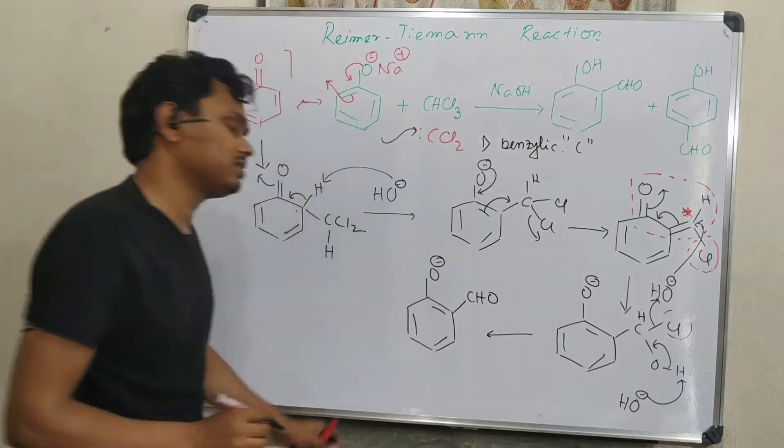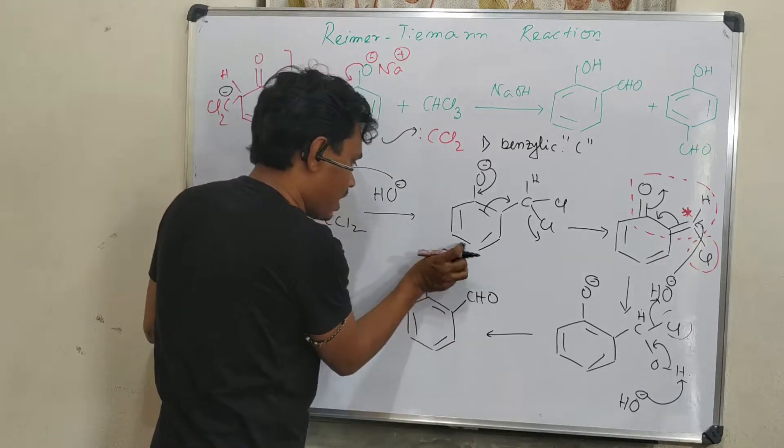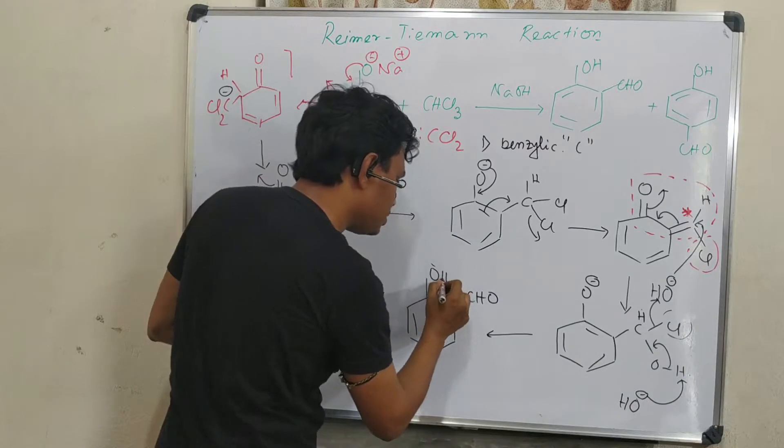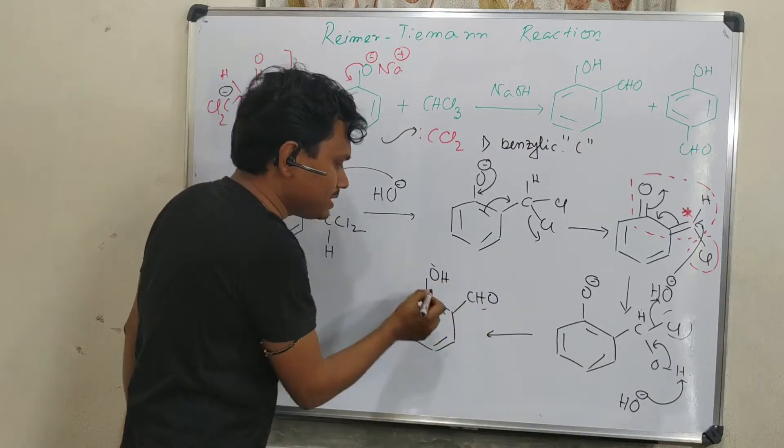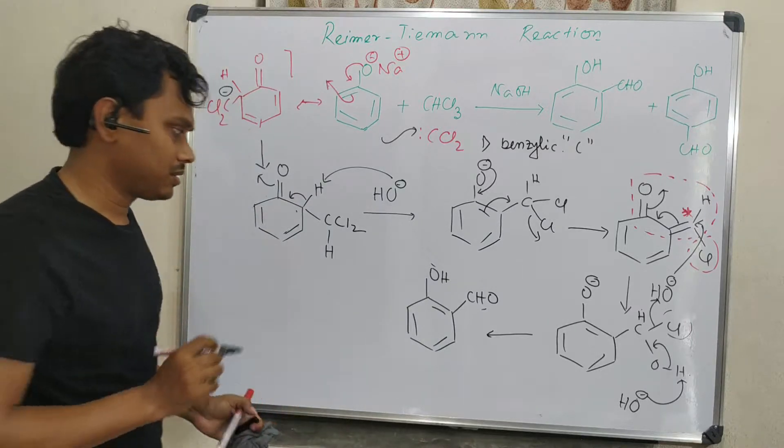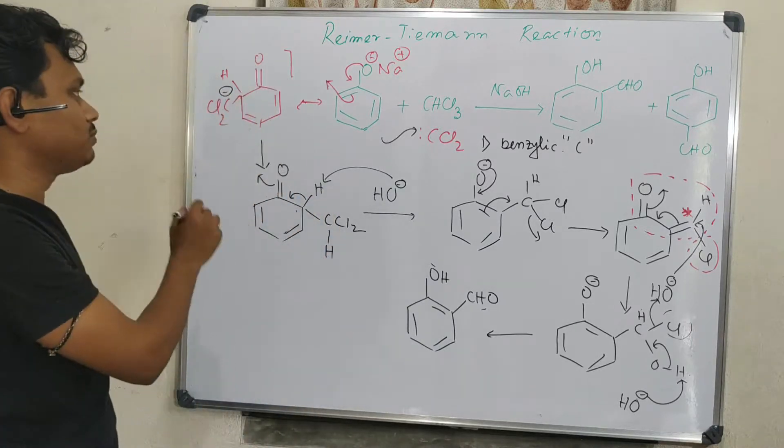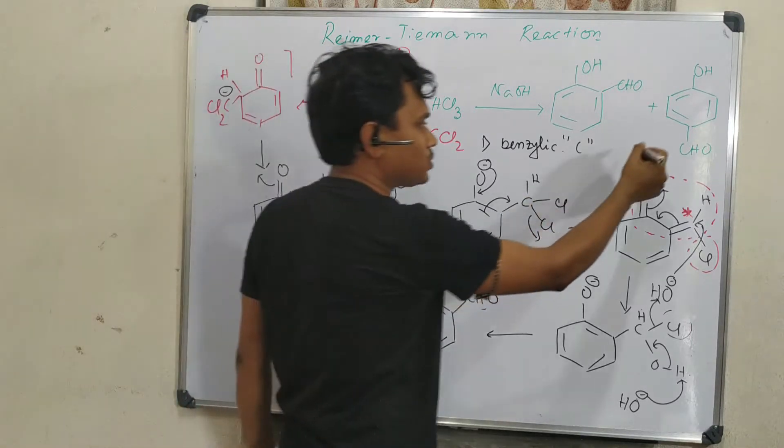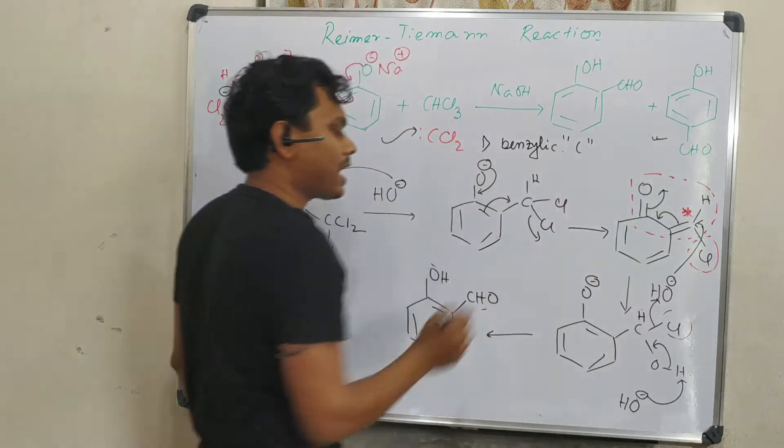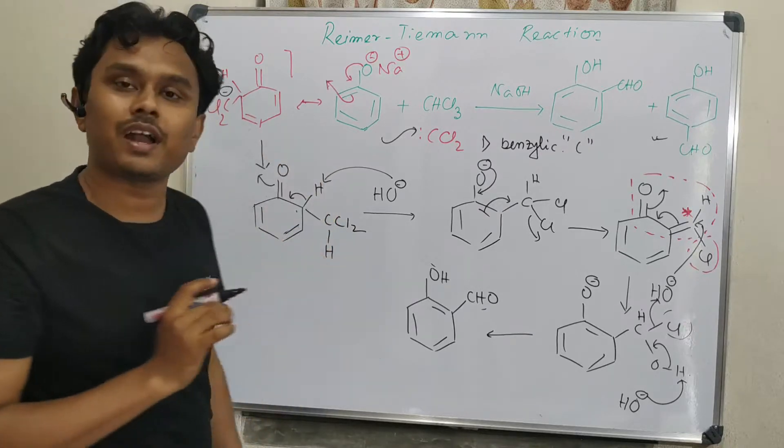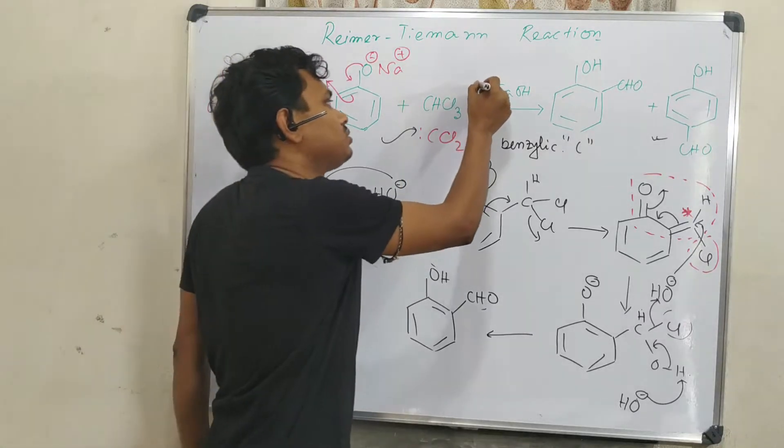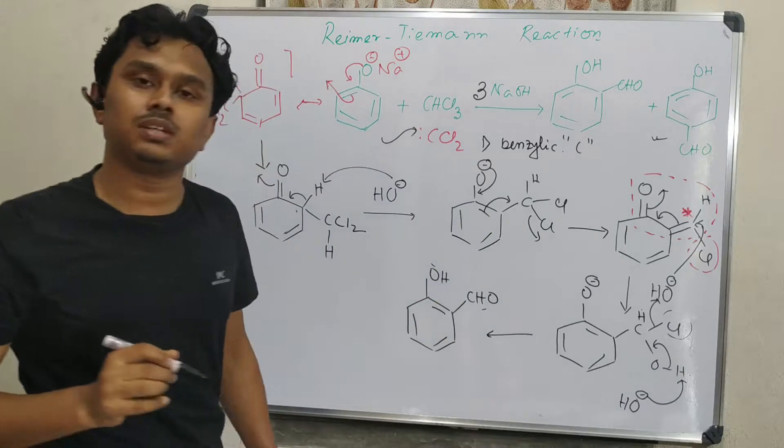After acidification, it produces this. So in this way, the aldehyde group is inserted into the phenol ring. The same mechanism will be followed in case of para isomer to produce para-hydroxybenzaldehyde. Now one question: how much hydroxide is needed? Actually, three molecules of hydroxide are needed.